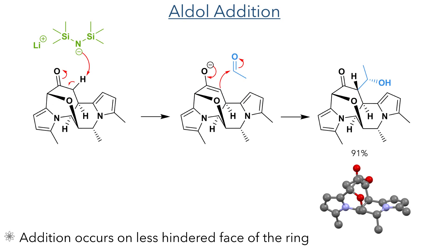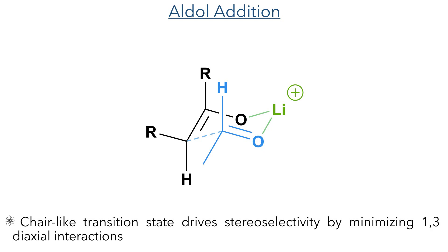Taking this compound forward, it then took part in an aldol addition reaction. Deprotonation of the alpha position with lithium HMDS formed an enolate that then added to acetaldehyde to form an alcohol. This only occurred on one face of the ring as steric hindrance blocked the concave side of the molecule. We can explain the stereochemistry of the resulting hydroxyl group by looking at the transition state for the enolate addition. Both the oxygen of the enolate and the aldehyde coordinate to the lithium cation, forming a chair-like transition state, where the more sterically demanding substituents occupy the pseudo-equatorial positions to minimize 1,3-diaxial interactions.